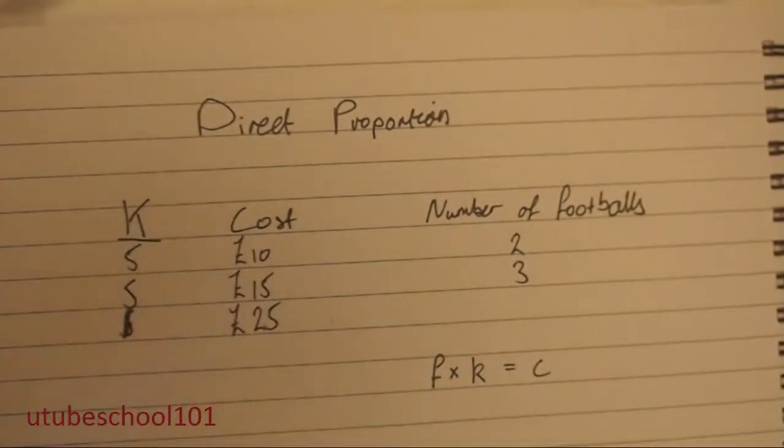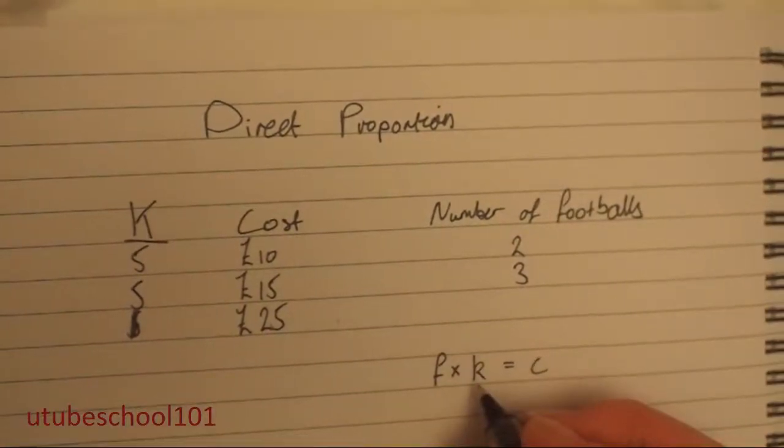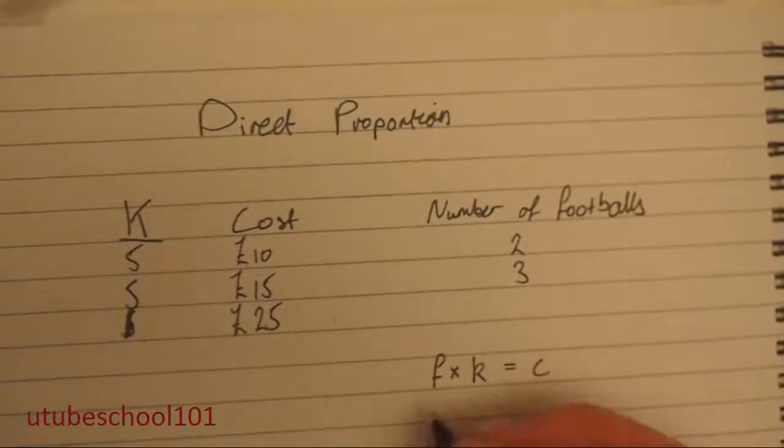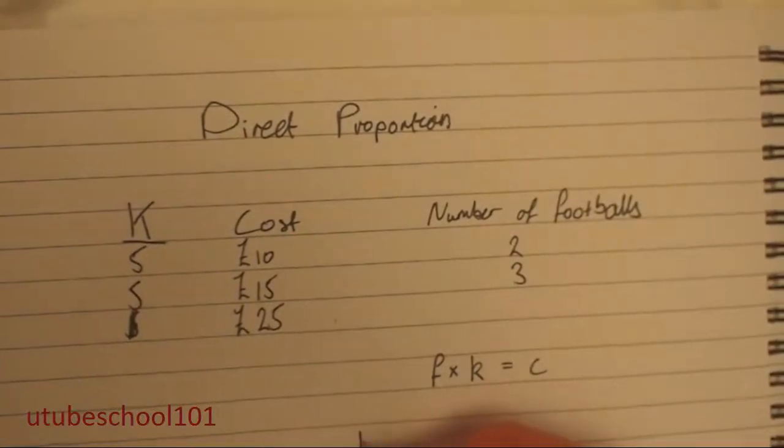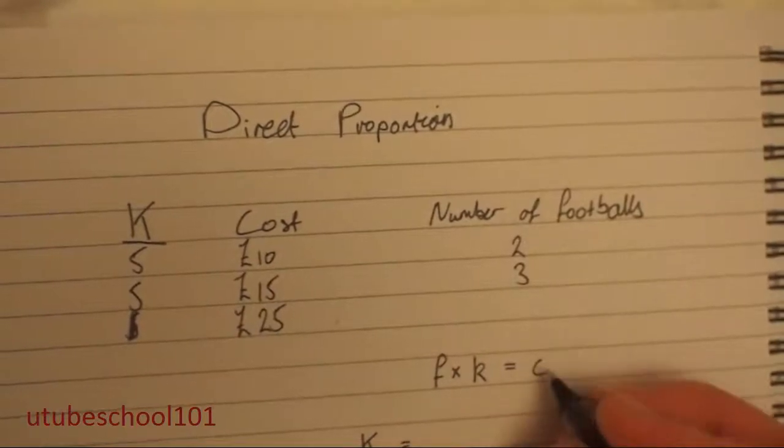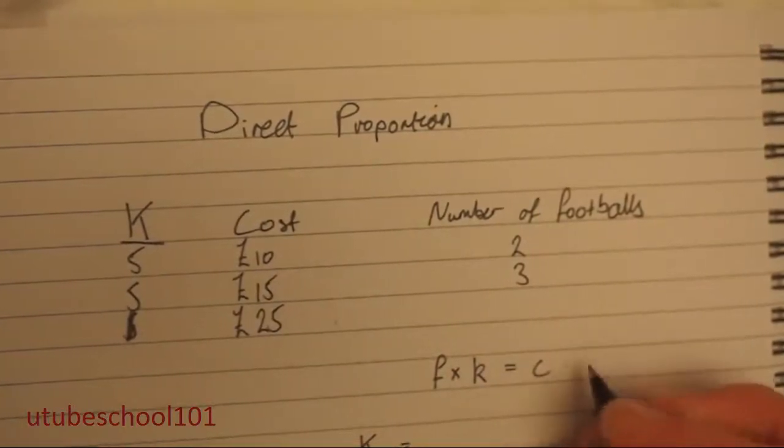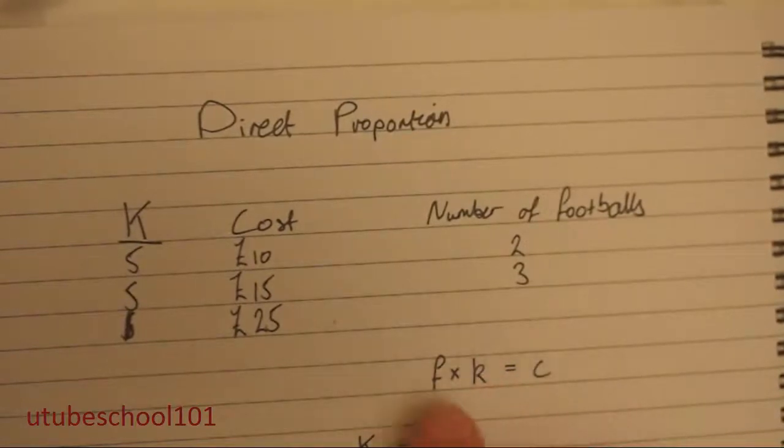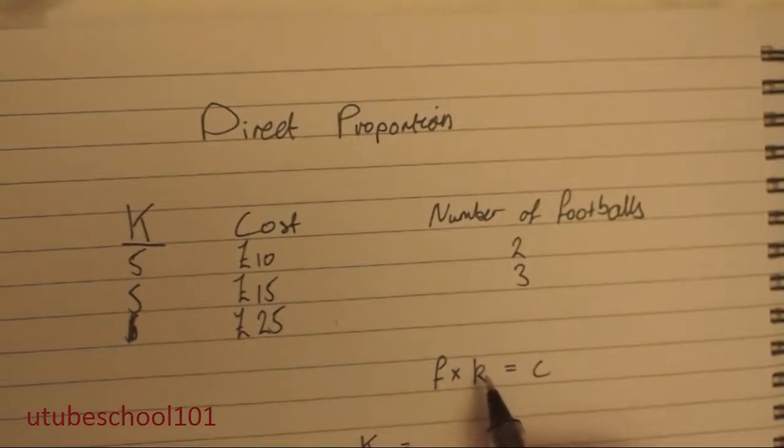I've already got it given to us, but let's pretend we haven't. So using this equation, we can work out what k is first. So k is equal to c divided by f. Because what we want to do is we want to make sure that k is the only letter which is on one side of the equation.